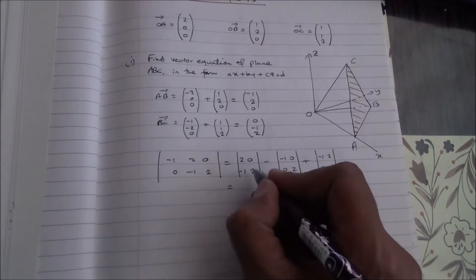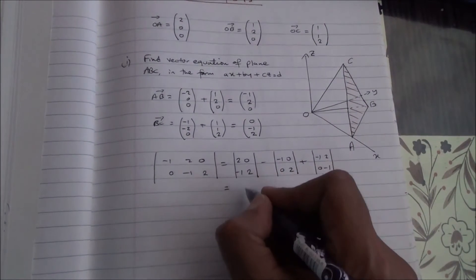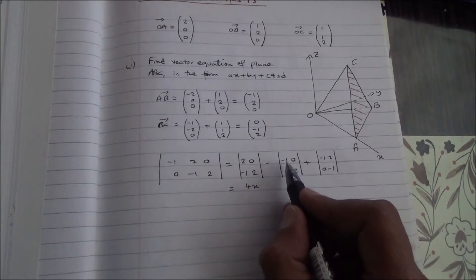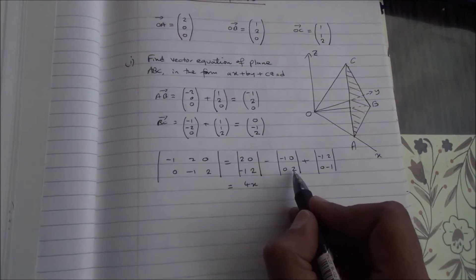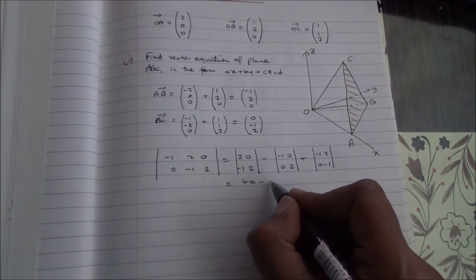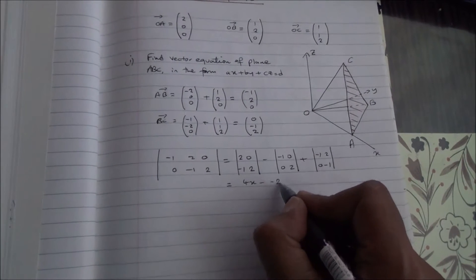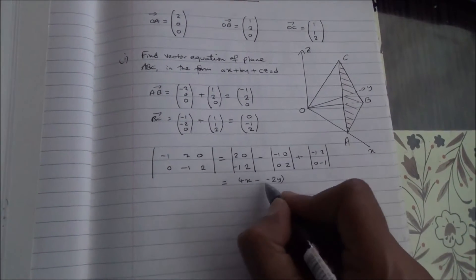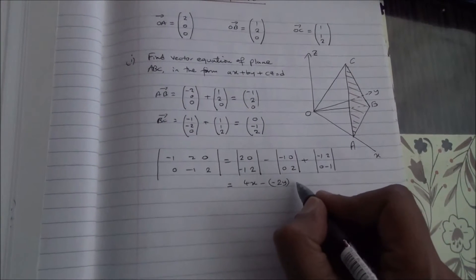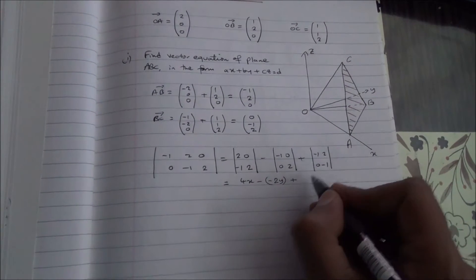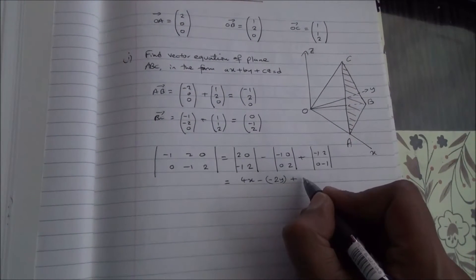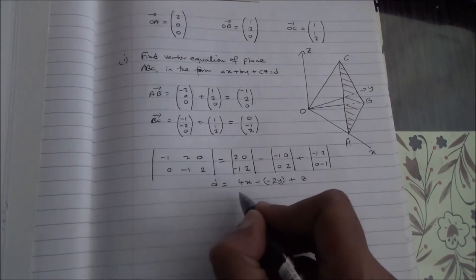2 times 2 is 4, 0 times minus 1 is 0, 4 minus 0 is 4, so we've got 4x. Then, I've got minus 1 times 2 is minus 2, you've got minus here, 0 times 0 is 0, minus 2 minus 0 is minus 2. So, minus 2y, and then I have minus 1 times minus 1 is 1, 0 times 2 is 0, 1 minus 0 is 1. So, 1 times z is z, and we can call that d.